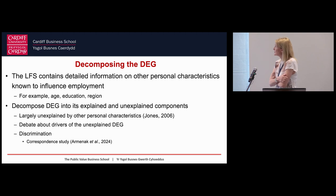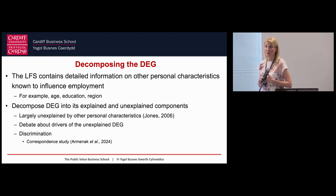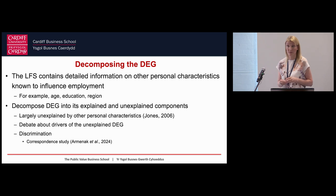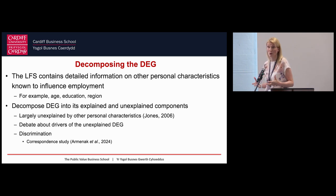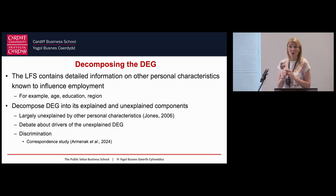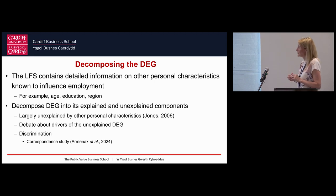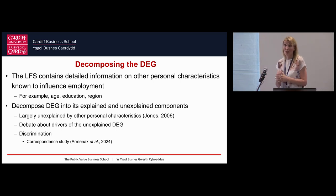The first thing I did as a PhD student was use the Labour Force Survey to better understand the disability employment gap. The strength of the LFS is that it contains comprehensive information about individuals - age, educational attainment, location - which can be controlled for in a regression framework. We know that disabled people are on average older and less well qualified, so we want to net out those effects through decomposition analysis. When we do that, only a relatively small part of the disability employment gap is explained - about 25% in my earlier work - leaving a large unexplained gap.